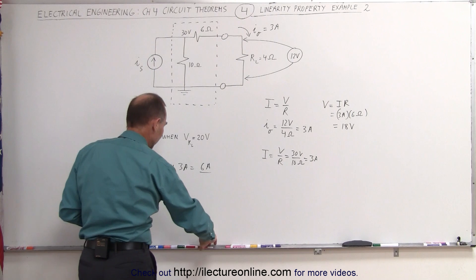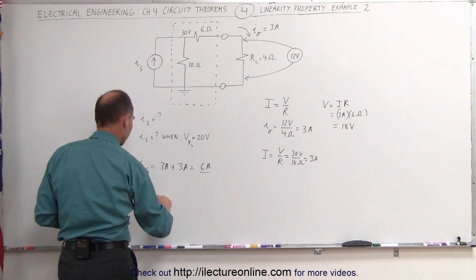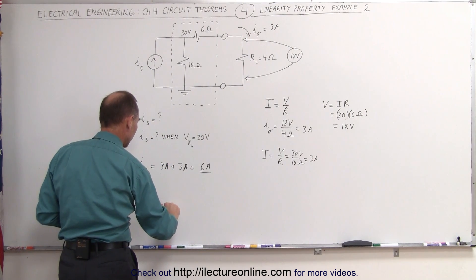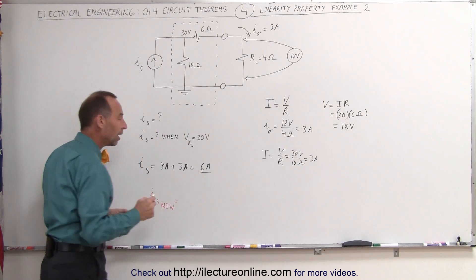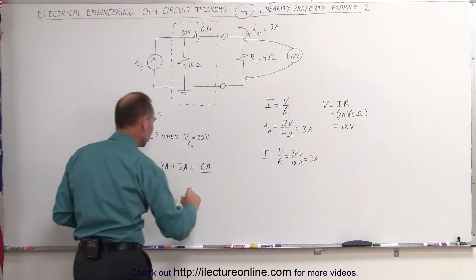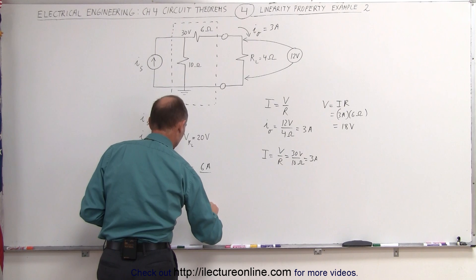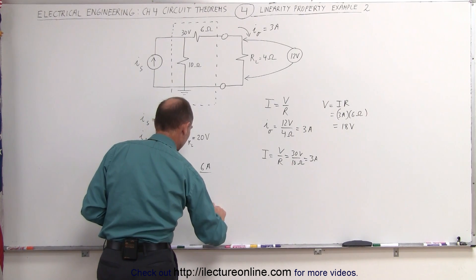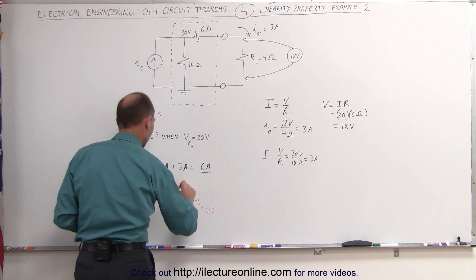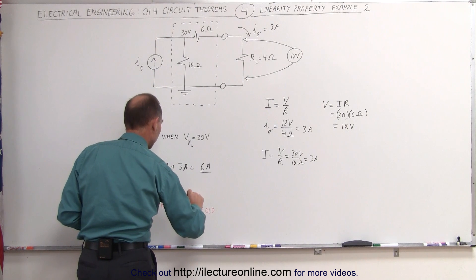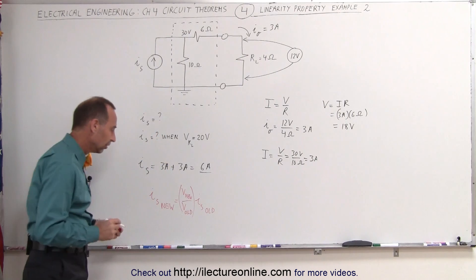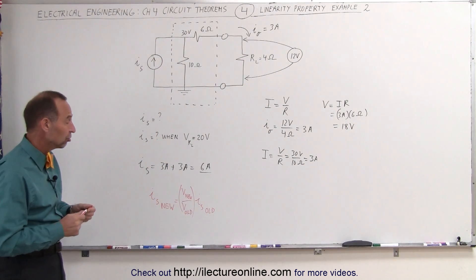Well, we have to realize that the new current on the source, I on the source new, must be equal to some constant ratio to the old. So that would be I of the source old. And we can see that that would be the ratio of V new across the load resistor divided by V old across the load resistor. Again, there's that linear relationship. That's what linearity means.